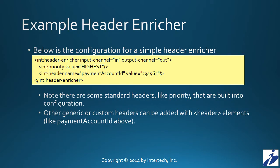To begin our exploration of enrichers, let's take a look at a header enricher. As its name implies, a header enricher is going to add data to the header of the message. In this example, the enricher is looking at an input channel called IN and is going to place the message in an output channel called OUT. It takes the message and adds a priority header, as well as a custom header called Payment Account ID. The priority header gets the value 'highest', and the Payment Account ID gets the value 234562. There are some standard headers like priority which allow for more concise configuration, but you can also add custom headers — in this case, Payment Account ID is a custom, or generic, header.